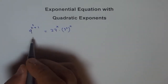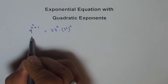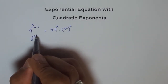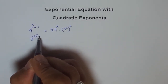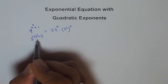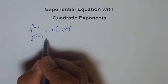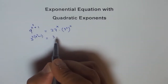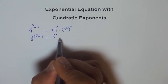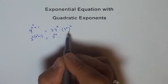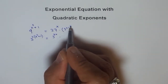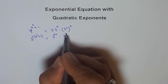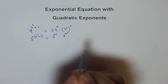So, 9 can be written as 3 squared. We already have x squared plus 1 as its power, so the exponents get multiplied. And 27 is 3 cubed, so this becomes 3 to the power of 3x. Times 3 to the power of x squared, since x gets multiplied with x.